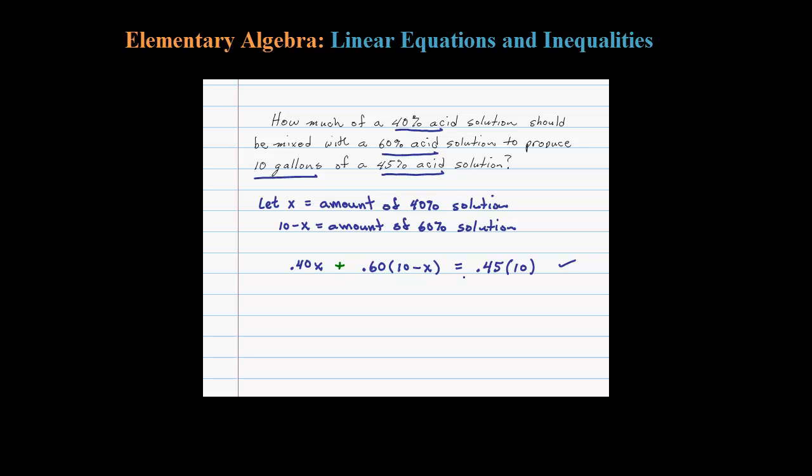So this here is our setup. The acid content in the first solution plus the acid content in the second solution equals the desired amount of acid content in the end, 45 percent of the 10 gallons. Now it's just a matter of solving this equation. So let's do it: .40X plus, here we have to distribute, so six minus .60X.